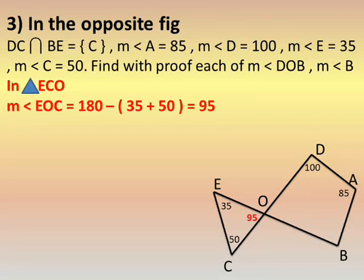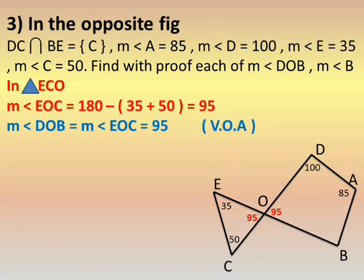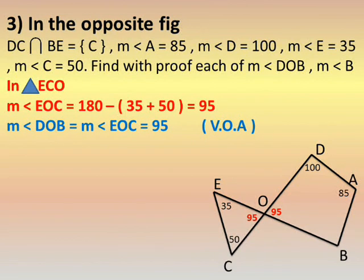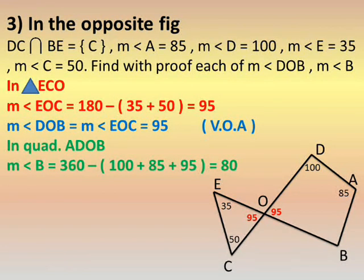In triangle ECO: measure of angle EOC equals 180 minus (35 plus 50), which equals 95 degrees. The third angle is found by subtracting the sum of the other two from 180. For the quadrilateral, angle DOB is vertically opposite to angle EOC which we just found to be 95. Since vertically opposite angles are equal in measure, measure of angle DOB equals measure of angle EOC equals 95 degrees.